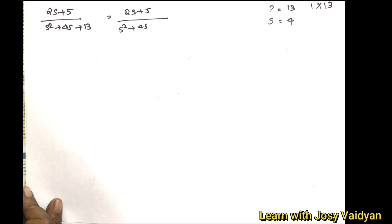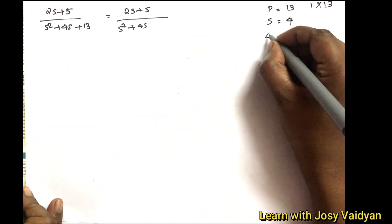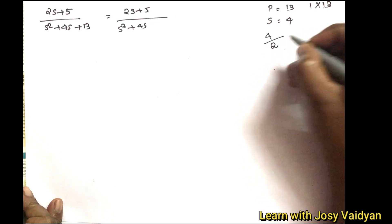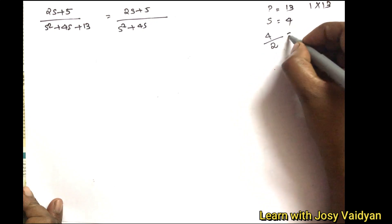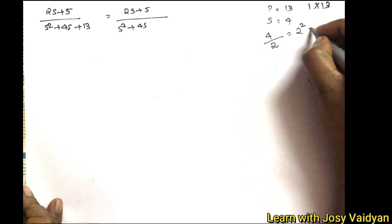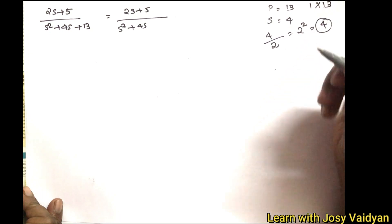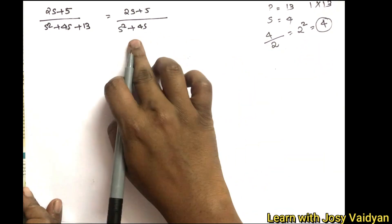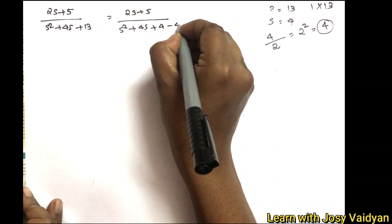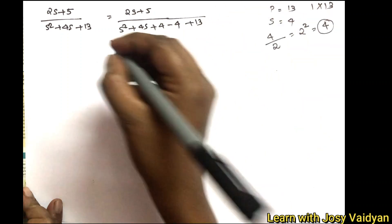We take the coefficient of s, which is 4, divide by 2 to get 2, and then square it to get 4. We add and subtract 4 to complete the square, giving us s squared plus 4s plus 4, which creates plus 13.